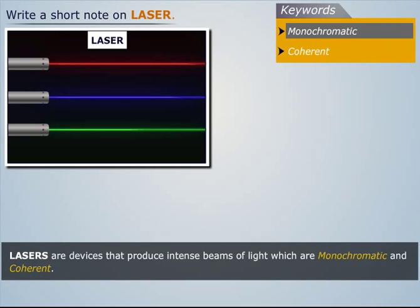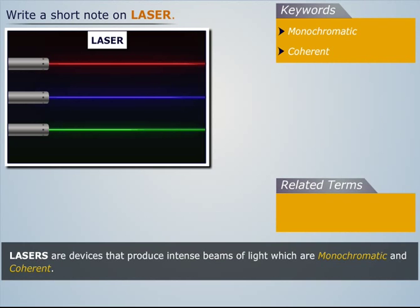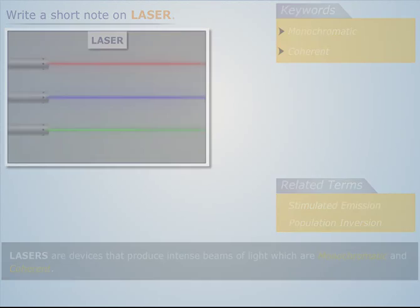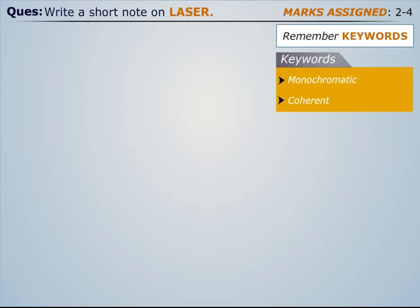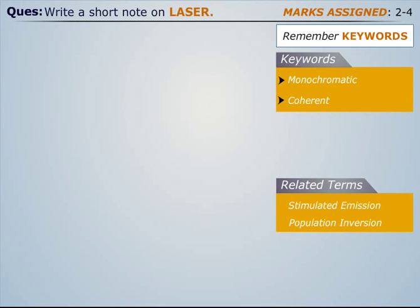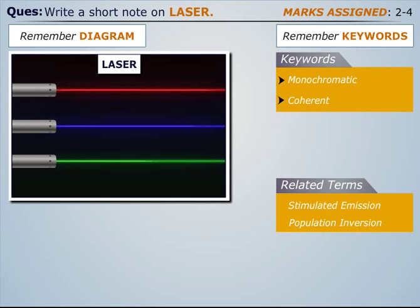Thus, lasers are devices that produce intense beams of light which are monochromatic and coherent. The related terms are stimulated emission and population inversion.